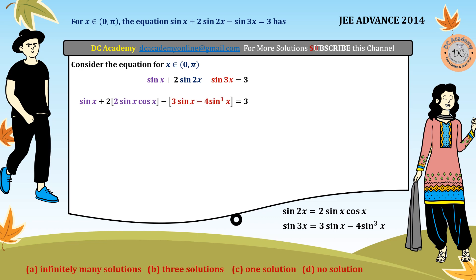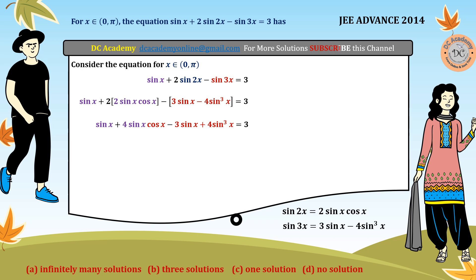After opening the brackets and simplifying, we find that sin x is common to every term. So we divide both sides by sin x. Notice we can do this because sin x ≠ 0 on the open interval (0, π) — zero and π are excluded. After dividing, we get 1 + 4cos x − 3... and so on.